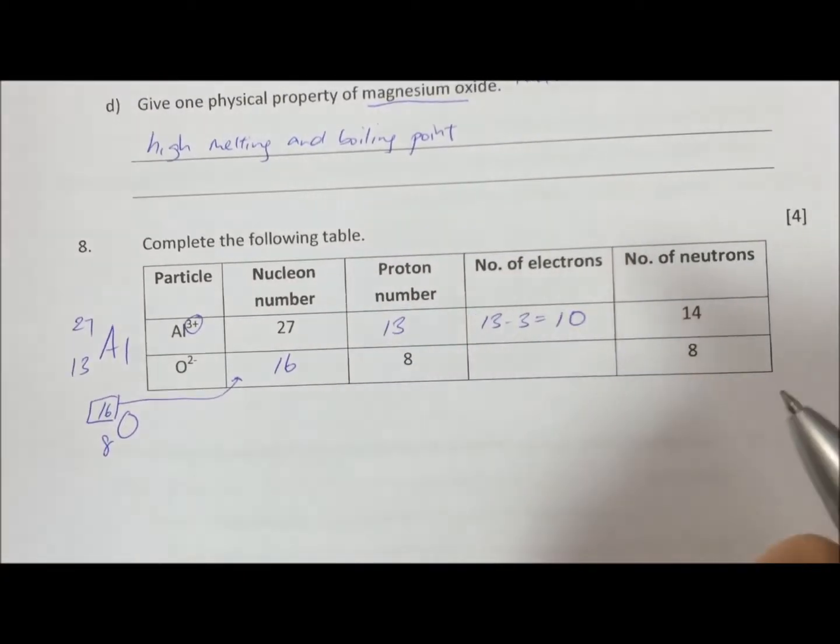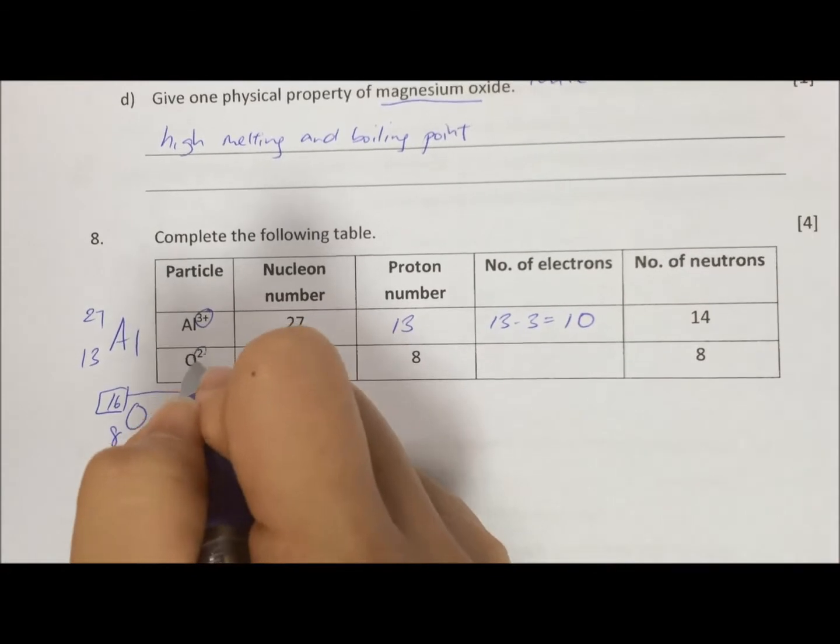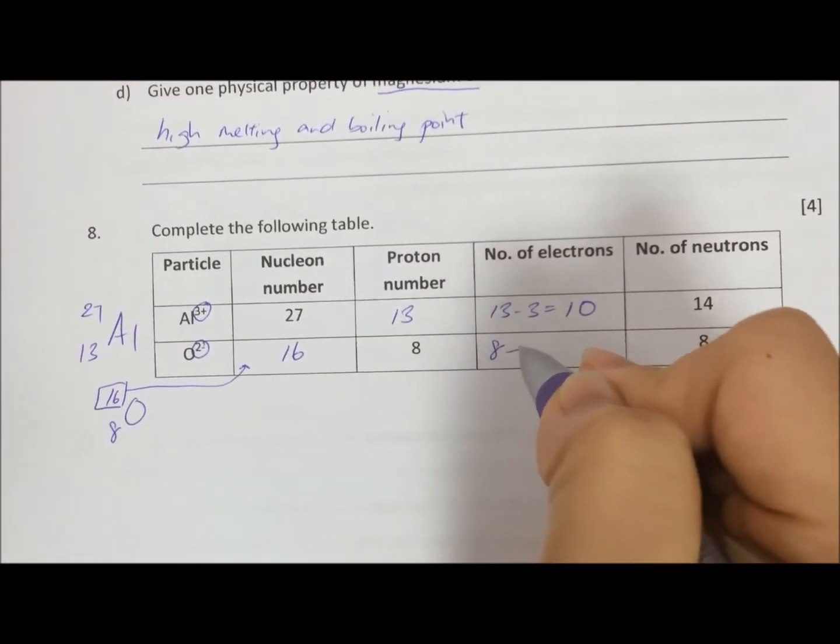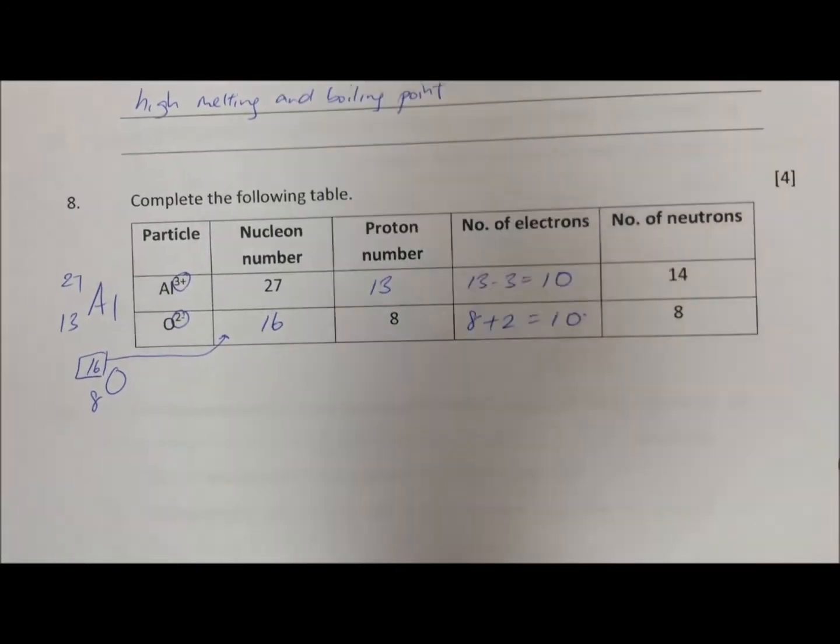Okay, now we look at oxygen. Oxygen, the top number is 16. So nucleon number is 16. It says 2-. 2- means it gained 2 electrons. So 8 + 2 = 10. So 10 electrons also give you a completely filled shell.